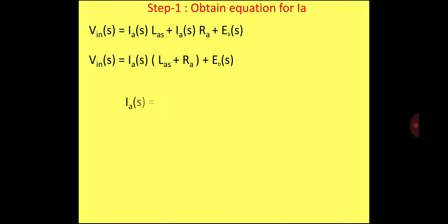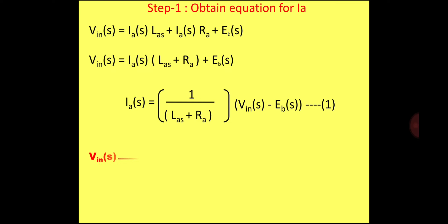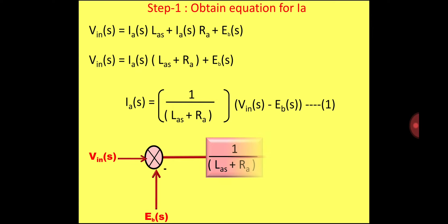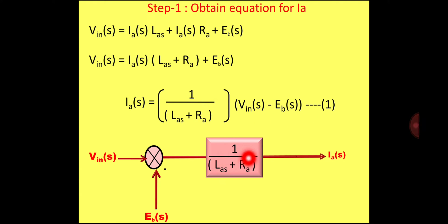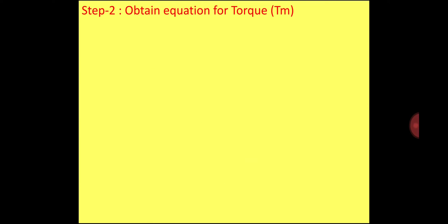We can convert the equation for IA(S) into a block diagram. We use a summing point where VIN(S) is one input and −EB(S) is the second input. This is multiplied by 1/(LAS + RA) to give IA(S). So in step one, we obtained the equation for IA(S).